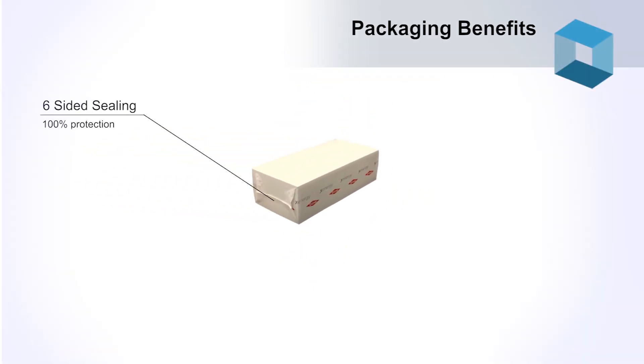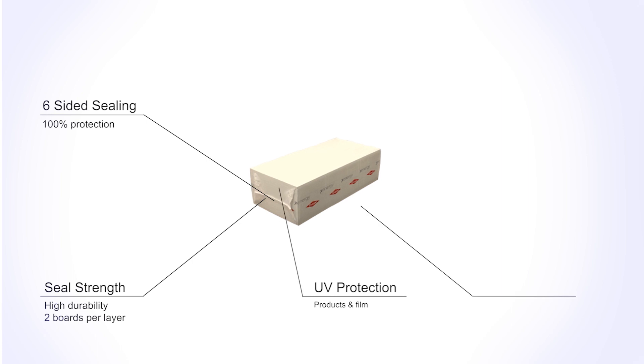Let's look at all the other benefits. The 6-sided sealing will protect your product from water and humidity. 4-sided sealing is also an option. The high seal strength of the packaging makes the product very durable when handling it, even if you have two boards per layer and need to handle and move the product around on site. UV protection is also an option for both the film and the products, and the appearance of the final packaging is very smooth.